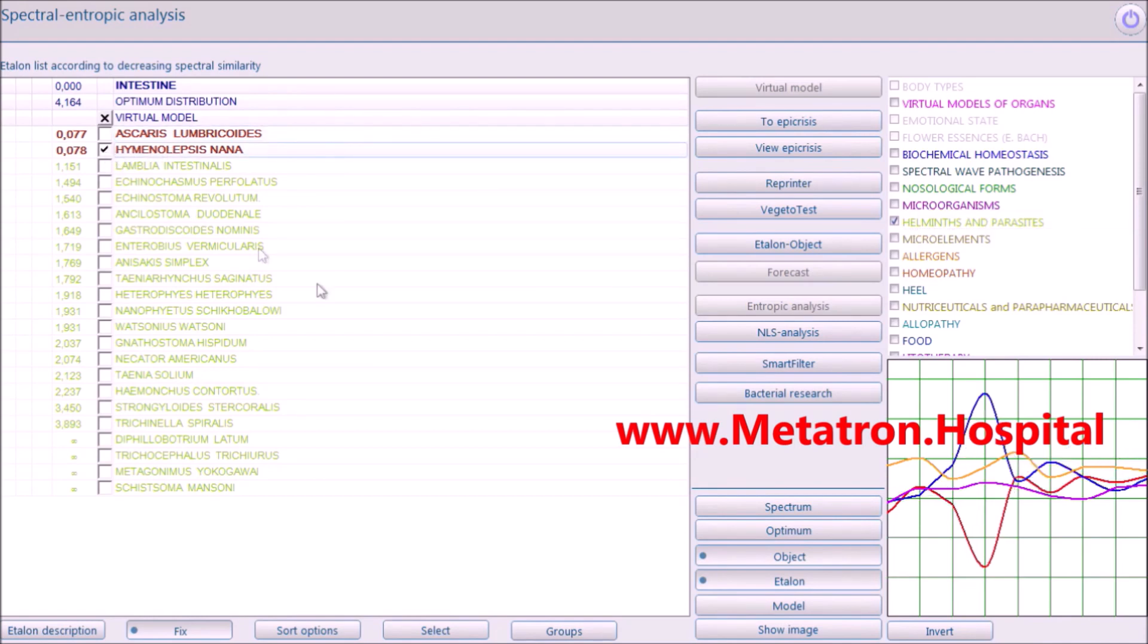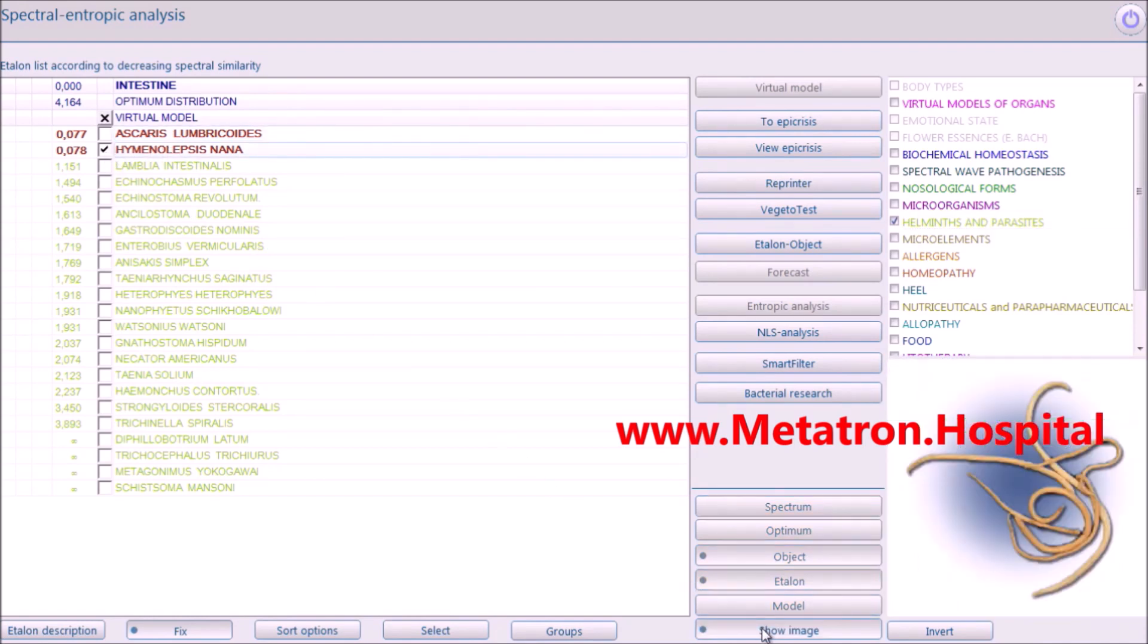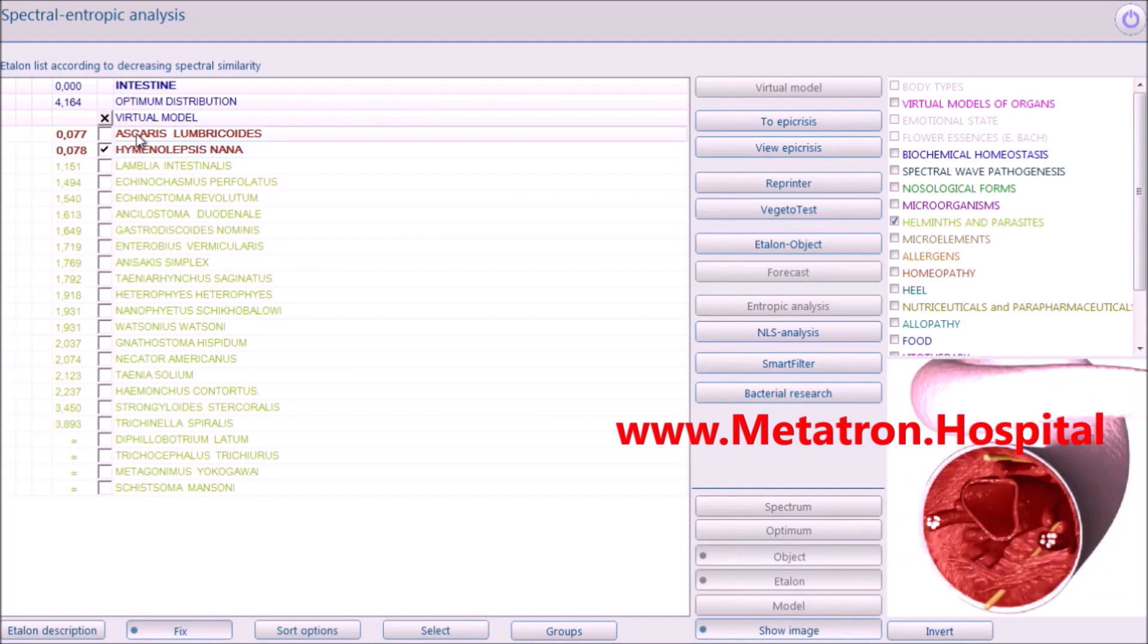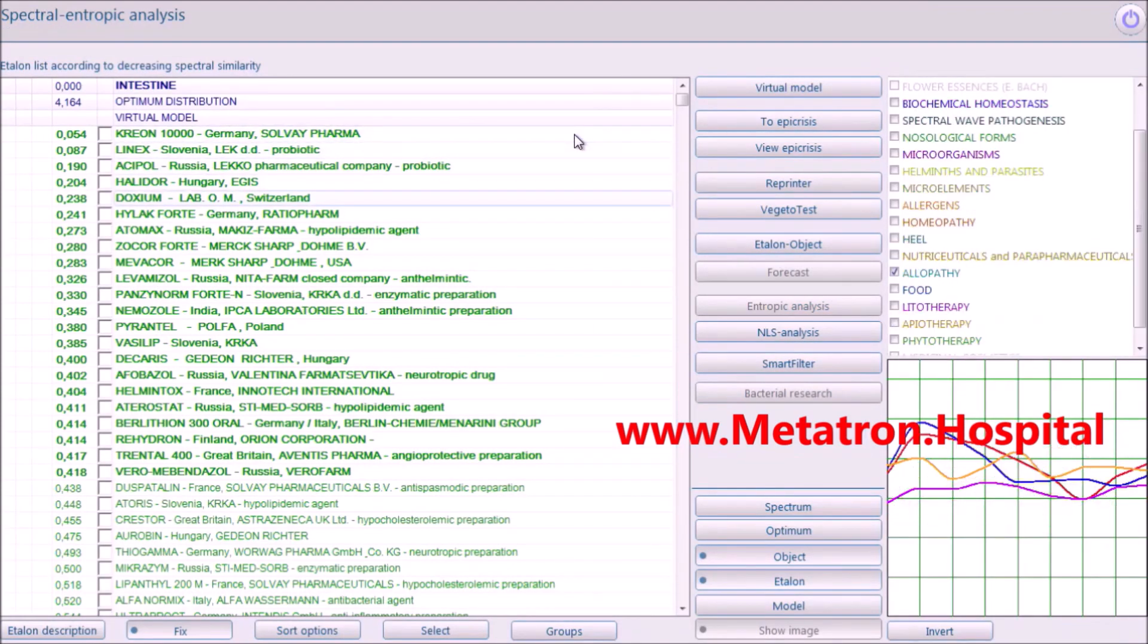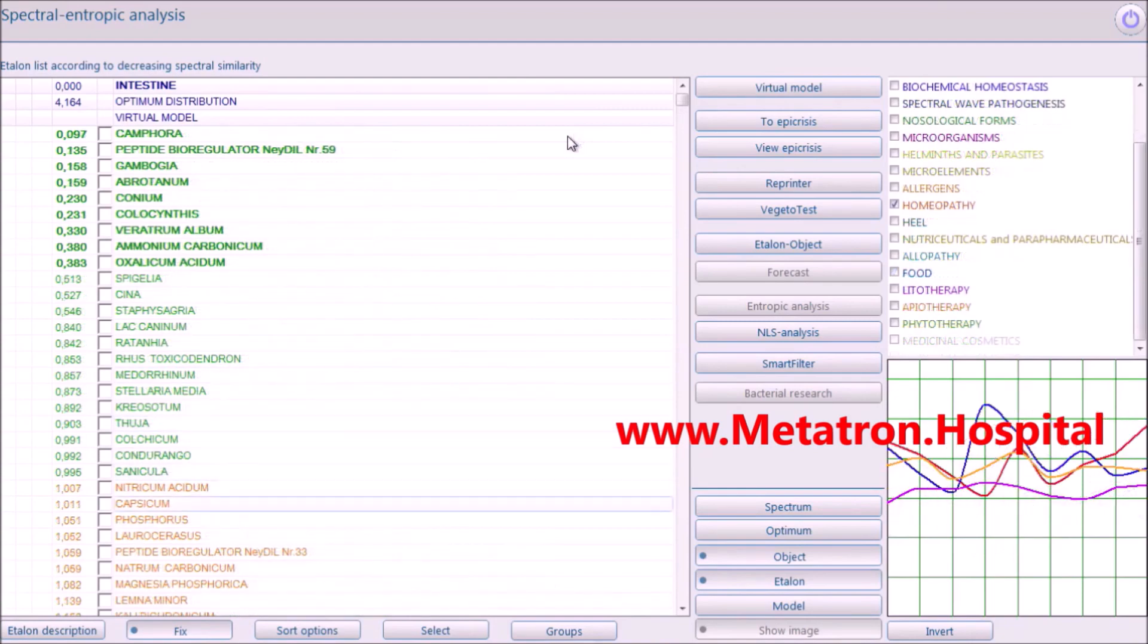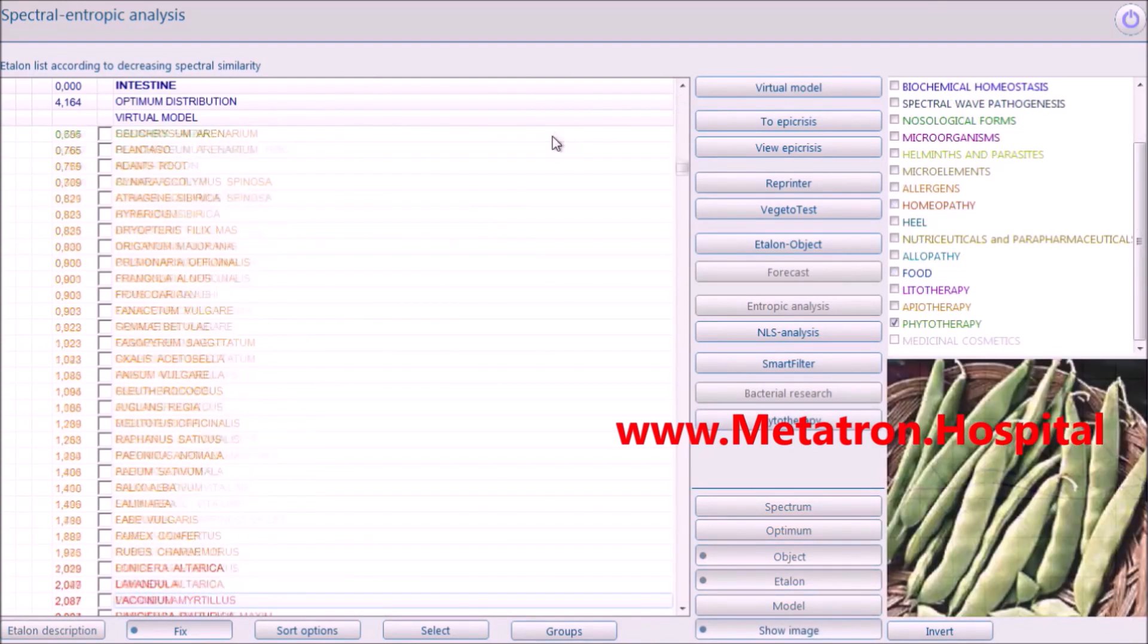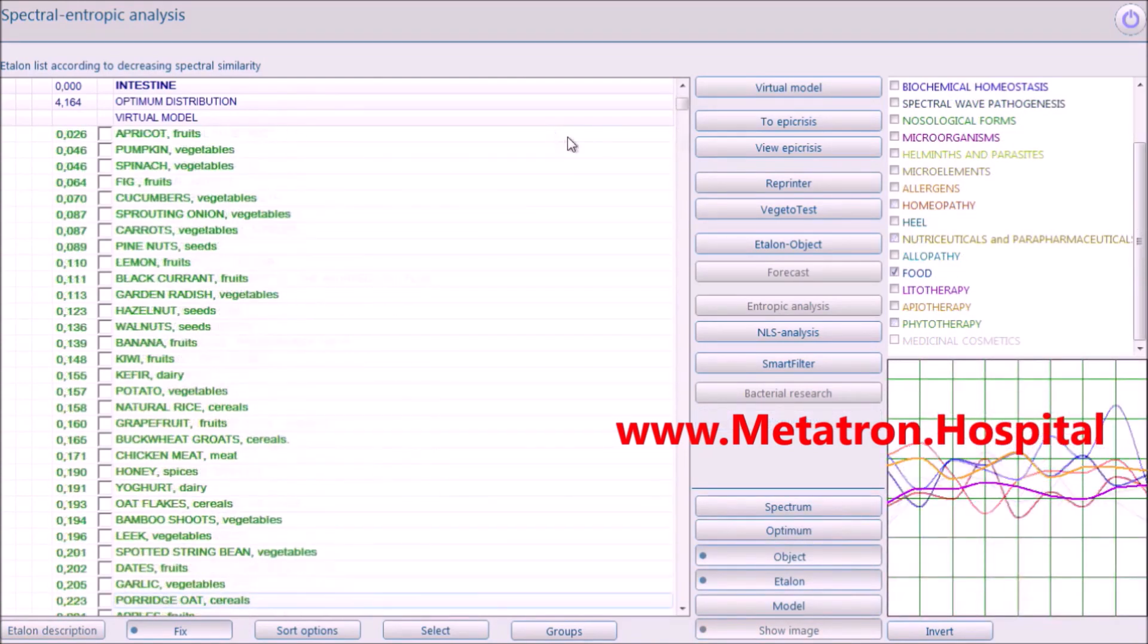The upgraded Metatron can be used with the same features in two ways: in local mode with headsets or in remote mode. New generation of software supports Russian, English, German, French, Spanish, Chinese and Japanese languages.